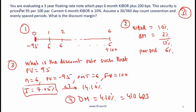Let's read this together. You are evaluating a 3-year floating rate note which pays 6 month KIBOR plus 200 basis points. This tells us immediately that the payment is semi-annual, so that means we have 6 semi-annual periods. 200 basis points, this is the quoted margin.